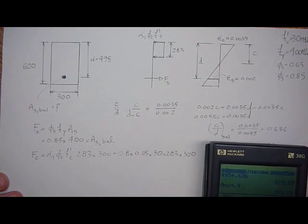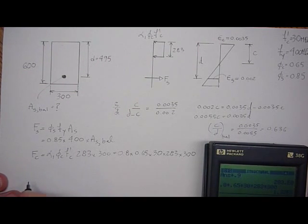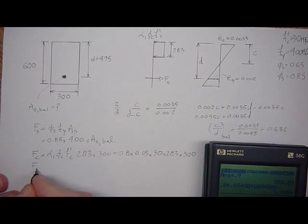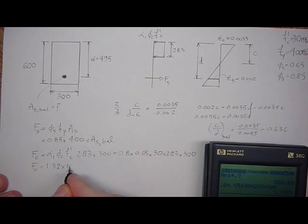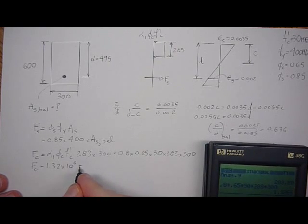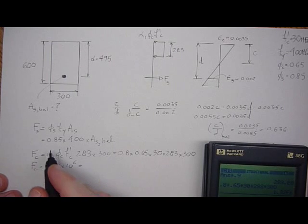So that's going to be 0.8 times 0.65 times 30 times 283 times 300, which equals 1.32 times 10 to the 6. So the force in the concrete equals 1.32 times 10 to the 6. But it has to equal the force in the steel, so we can calculate where the area steel balances from that.